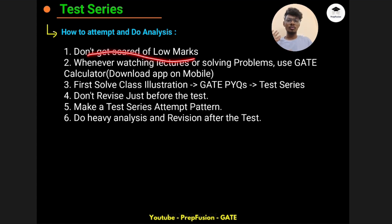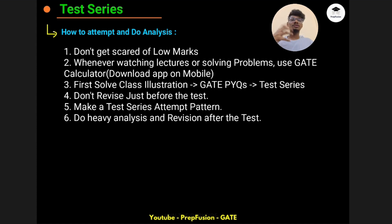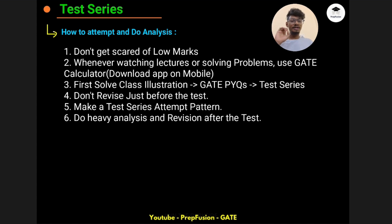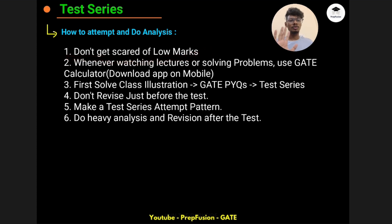The first thing is: don't get scared of low marks. Once you start attempting the series, most students will start now with subject-wise test series and you may see you are getting 10 marks, 5 marks, 9 marks out of 30. Don't worry — I also got those types of marks, Himanshu has also got those types of marks. It's fine initially to get low marks, but you have to understand why you are getting them.